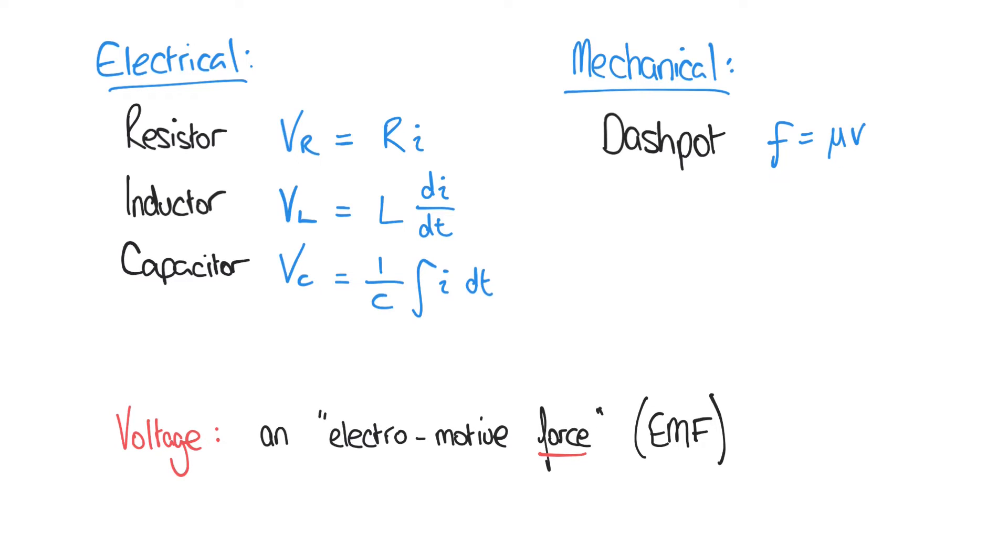So hopefully you can see the analogy between these two formulas. Vr equals Ri and F equals mu V. In both cases, we have a force. In the electrical world, it's an electromotive force or a voltage. In the mechanical world, it's a physical force, F.